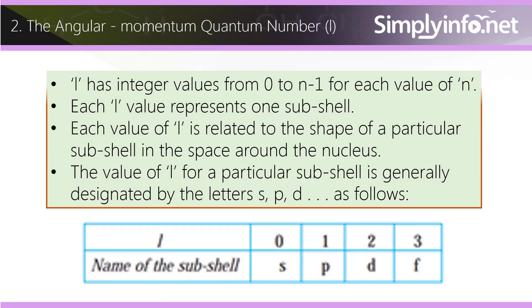The angular momentum quantum number l. l has integer values from 0 to n minus 1 for each value of n. Each l value represents one subshell.